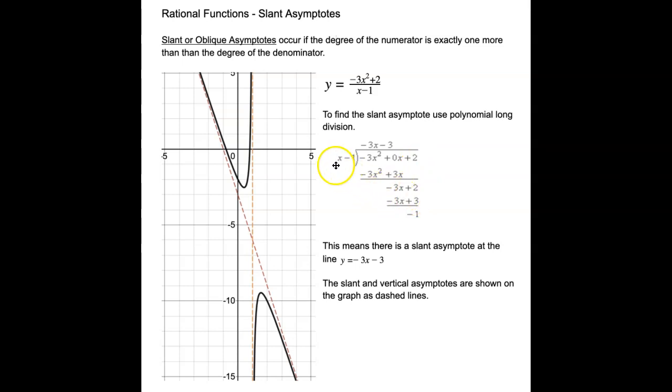So again, I'm going to see how many times does x go into -3x? That would be -3. And I multiply. -3 times x gives me -3x. -3 times -1 gives me plus 3. When I subtract this line from this line, my remainder is -1. So this result tells me that I have a slant asymptote at the line y = -3x - 3.